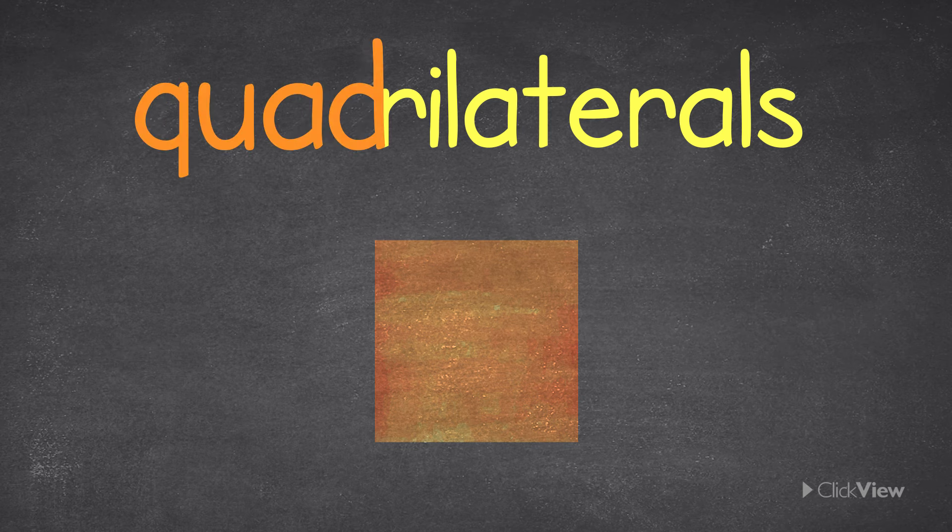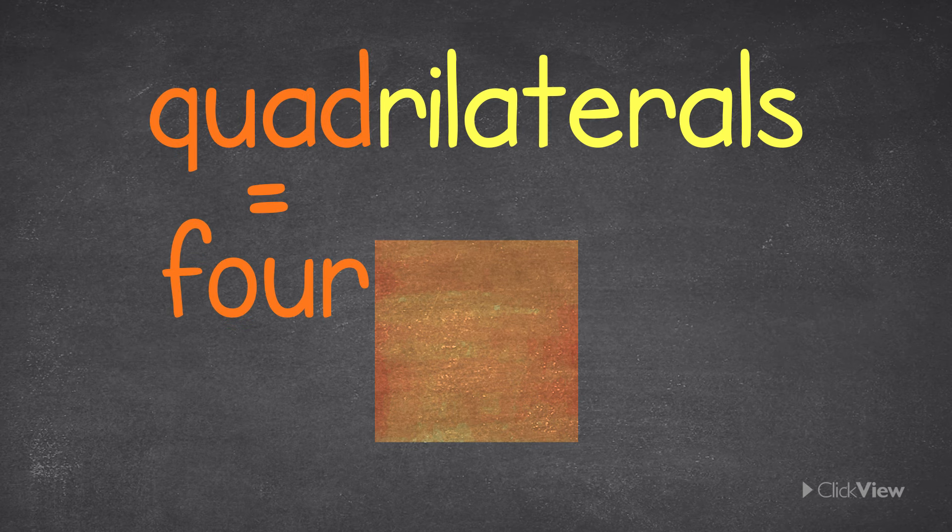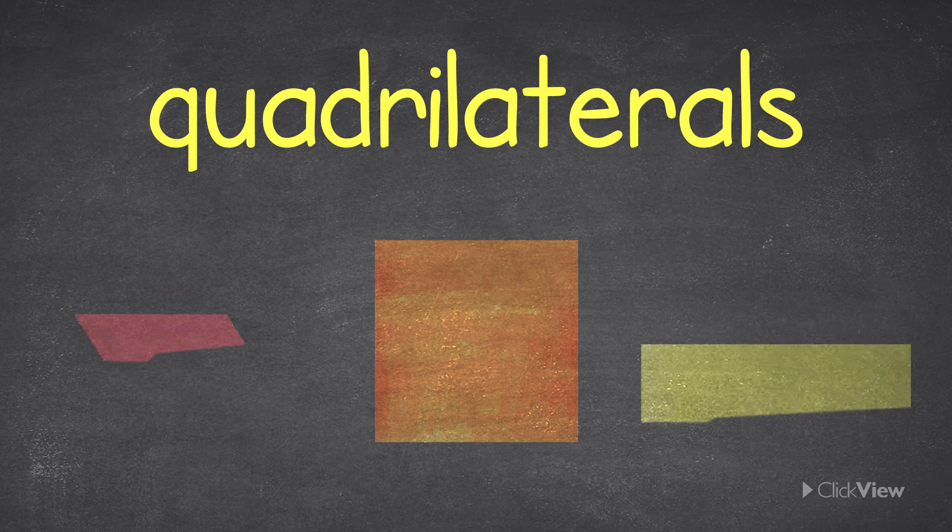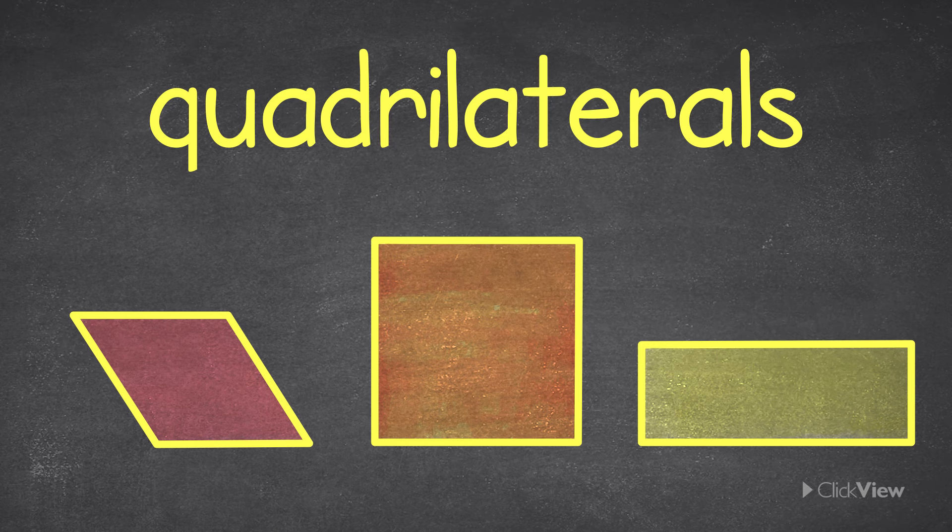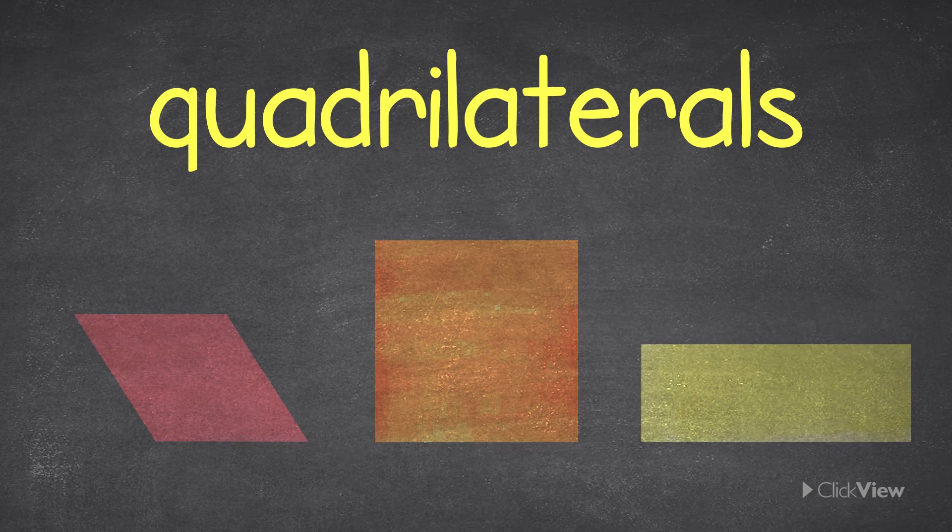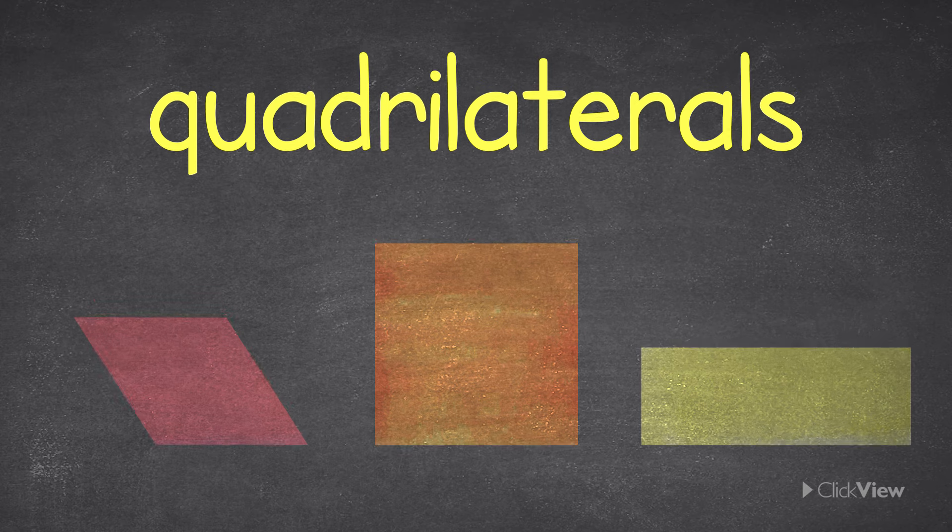Did you know that there is a family of shapes called quadrilaterals? Quad means four. So this means the quadrilateral family is made up of all those shapes that have four sides and four corners. But each quadrilateral shape has small differences that make them unique from each other. Let's have a look at these quadrilateral shapes.